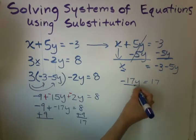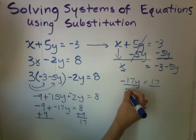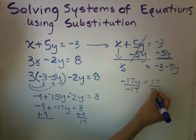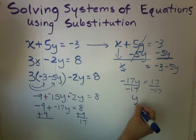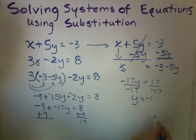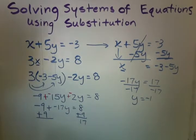And then in order to get rid of your negative 17, we're going to do the inverse operation by dividing. Since negative 17 is being multiplied to y, we're going to divide it. And we get y equals negative 1.